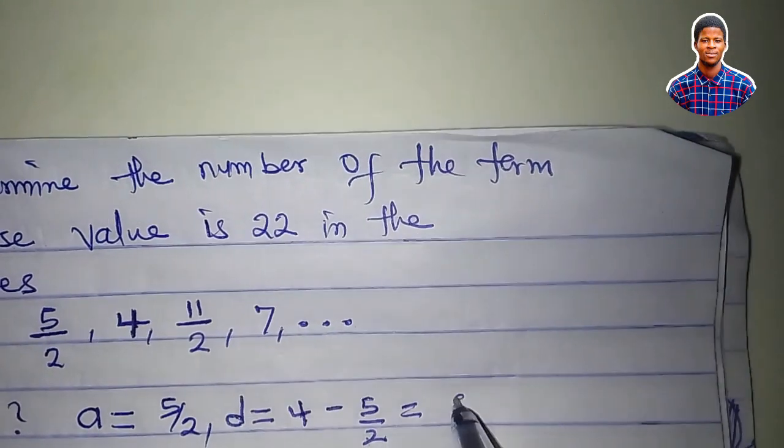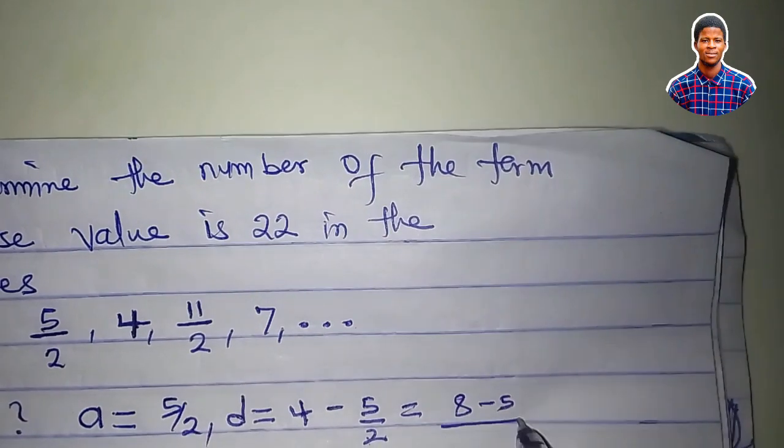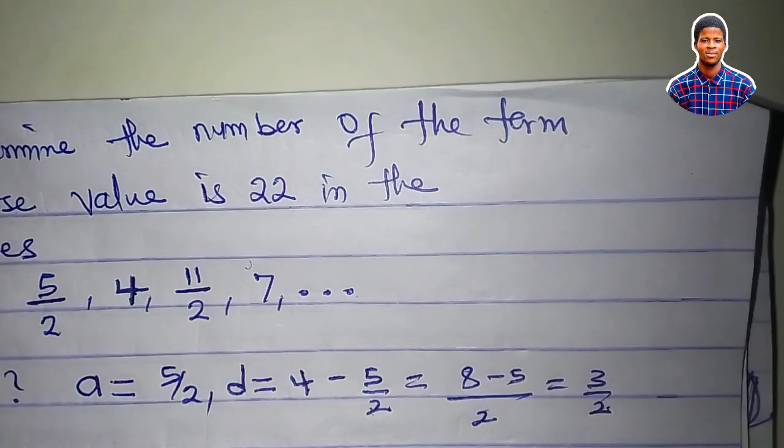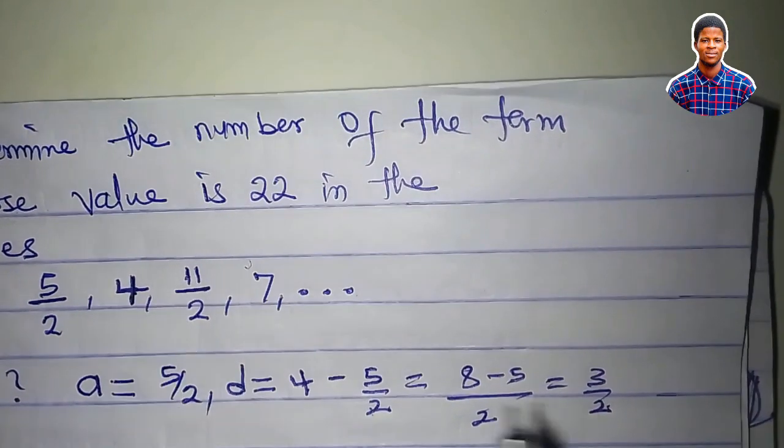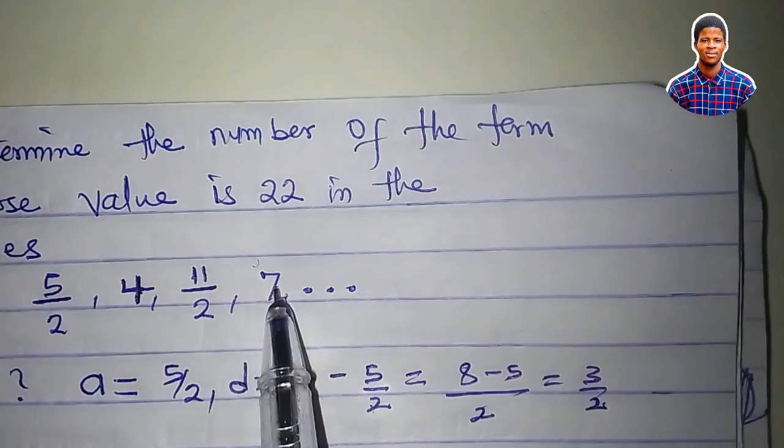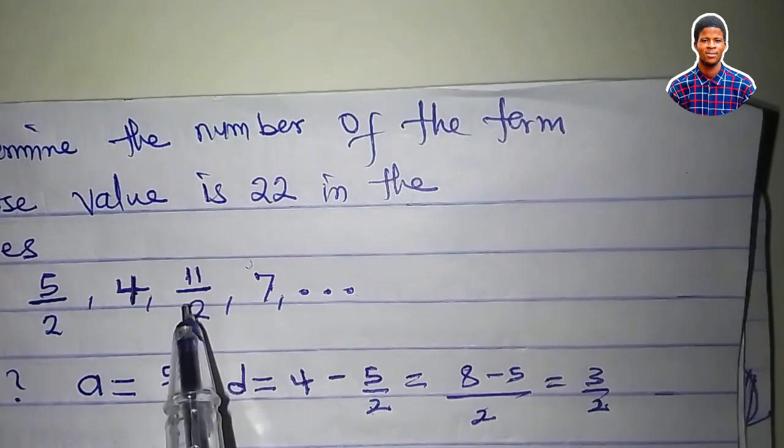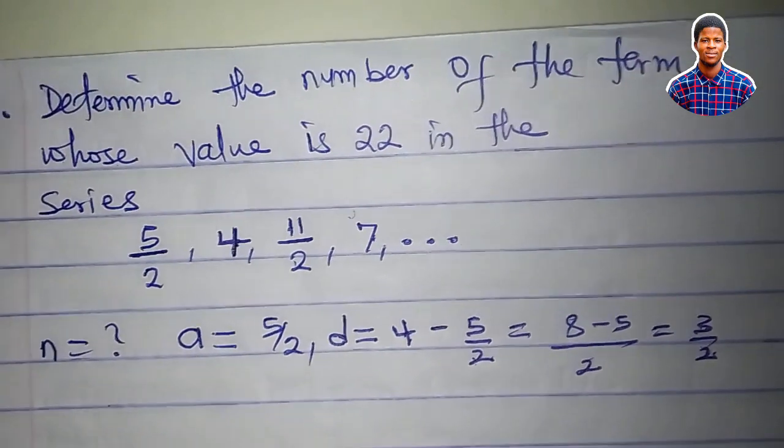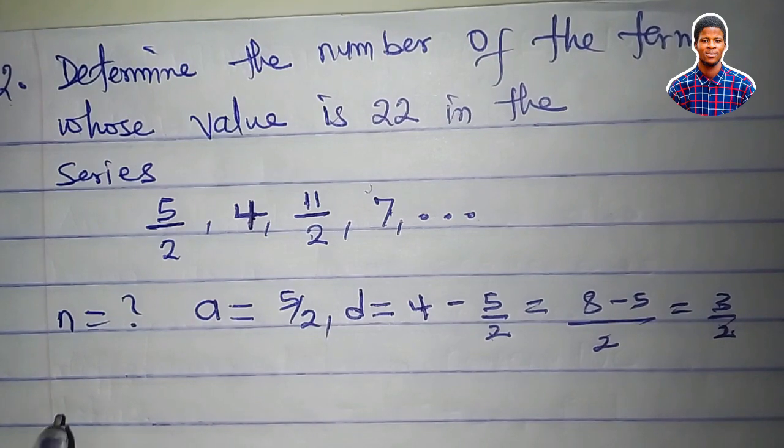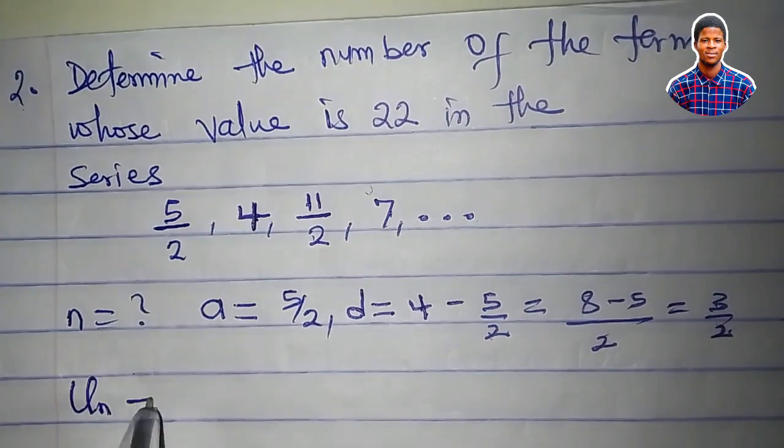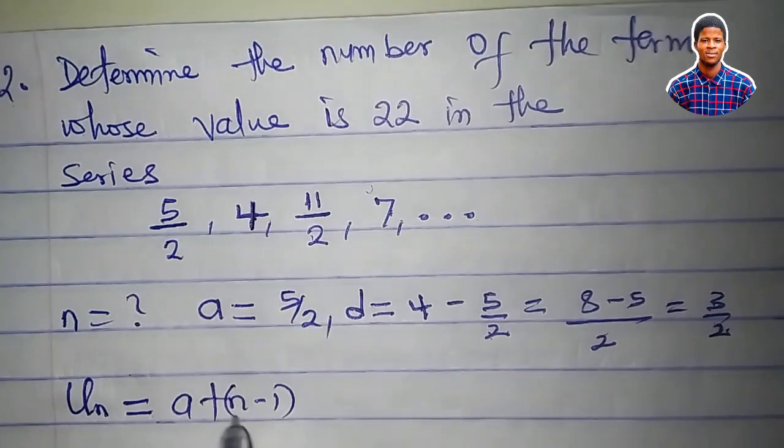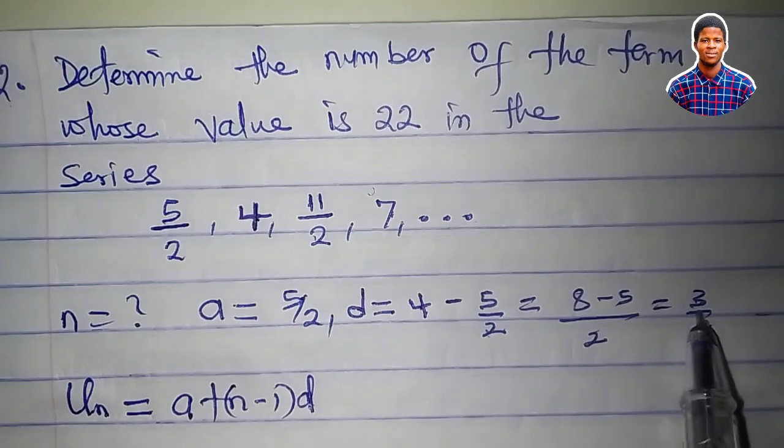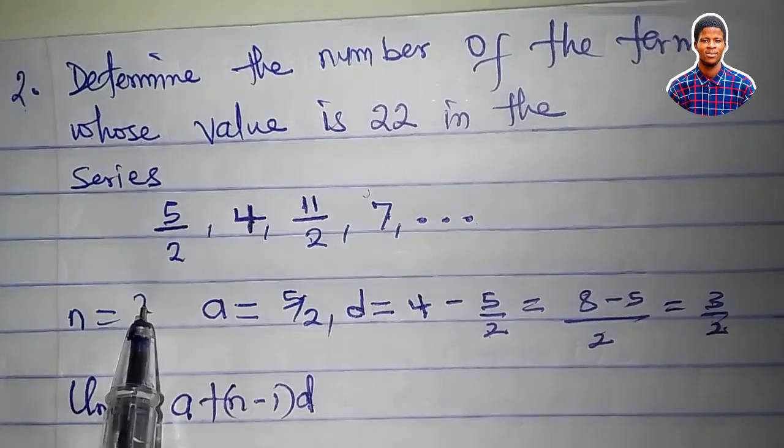Two times four is eight. That's eight minus five all over two, which equals three all over two. Of course, eleven over two minus four is three over two. Seven minus eleven over two is still three over two. So the common difference is three over two. Now, our nth term formula says u sub n equals a plus (n minus one) d. a is five over two. d is three over two. n is what we are looking for.